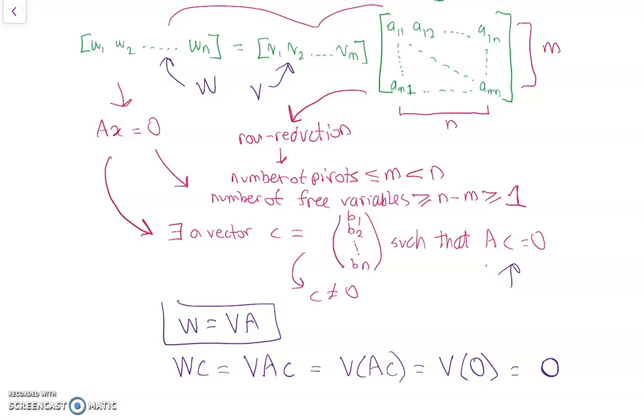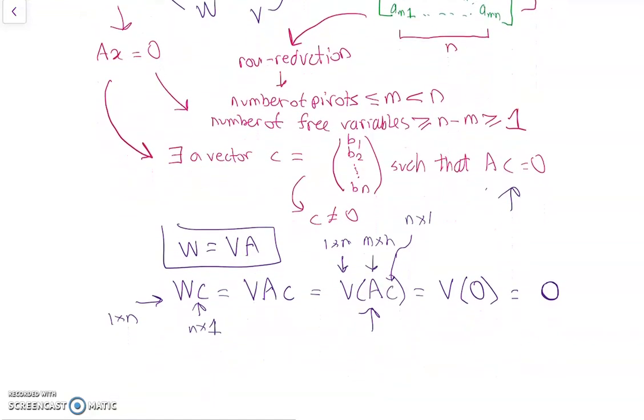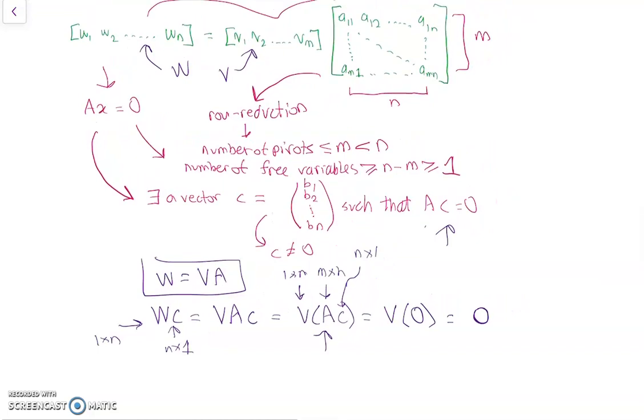Okay, so if you just look at the dimensions of each of the matrices. So V is 1 by M, A is M by N, and C is N by 1. So in fact, this is just going to be a 1 by 1 matrix, so just a number 0. So that's V times A times C. And W is 1 times N, and C is N times 1. So W times C is just going to be the number 0.